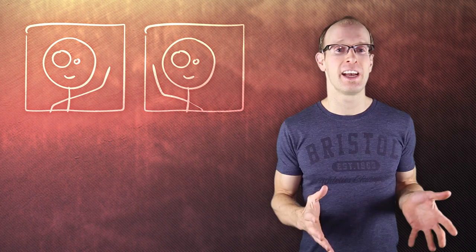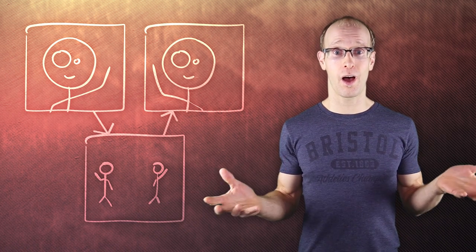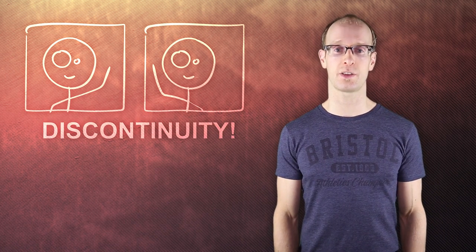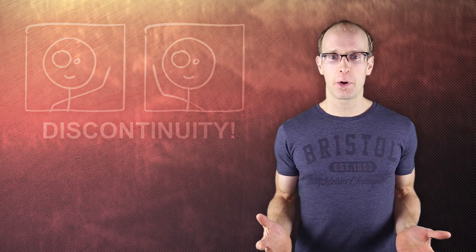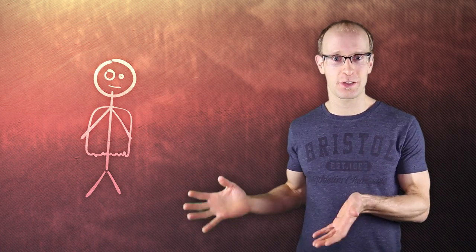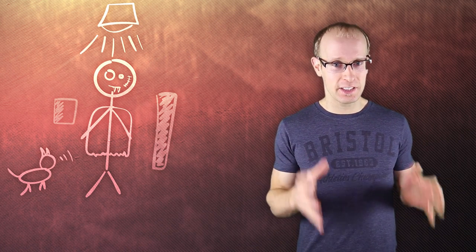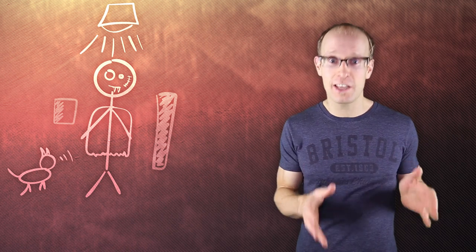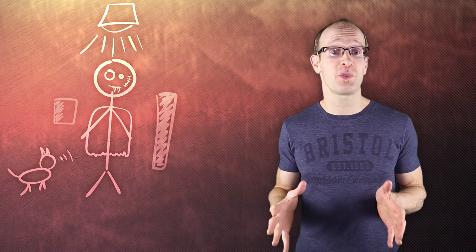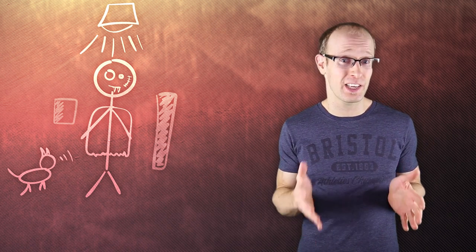Suddenly, every movement of every actor becomes really important. Just imagine: in one take an actor is waving with their left hand, and in another take they're waving with their right hand. If you miss this during editing and you cut those clips together, you just introduced discontinuity. To make matters worse, the same goes for everything else in your shot — from the actor's costumes to the makeup, the lighting, the background elements, even the audio. If there are any inconsistencies between different shots in your final edit, you have a problem with continuity, and that is potentially very bad.